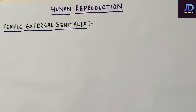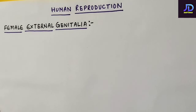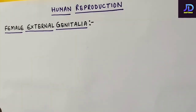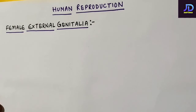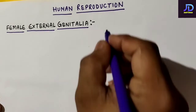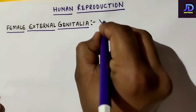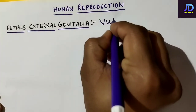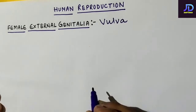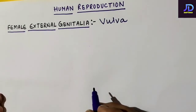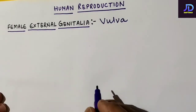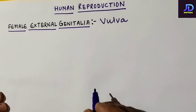In this video we will discuss the external genitalia in the female reproductive system. The external genitalia in the female reproductive system is known as vulva.